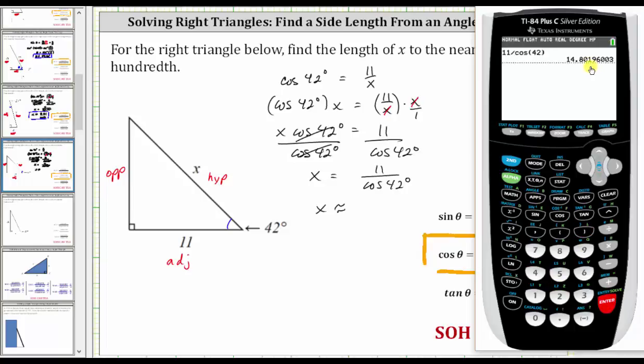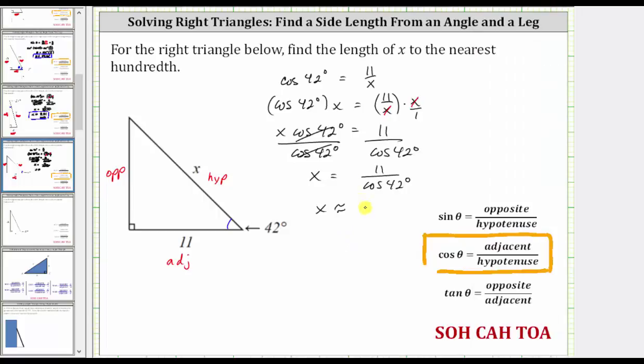Notice how we have a one in the thousandths place value, or third decimal place, and therefore we round down. X is approximately fourteen point eight zero units. I hope you found this helpful.